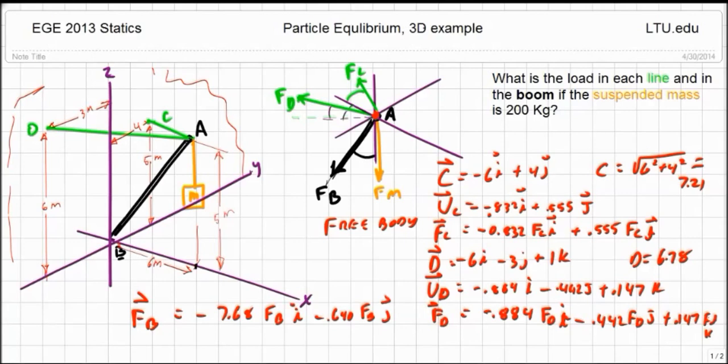So I have my forces and I also have another force, the force due to the mass. And that's just going to be the 200 kilogram times the 9.81 and it's going to be in the Z direction.